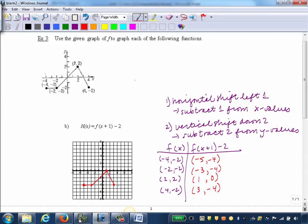And finally, let's make sure we label these key points. So negative 5, negative 4; negative 3, negative 4; 1, 0; and 3, negative 4.